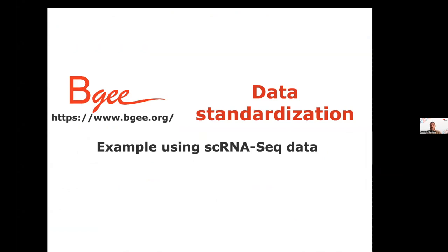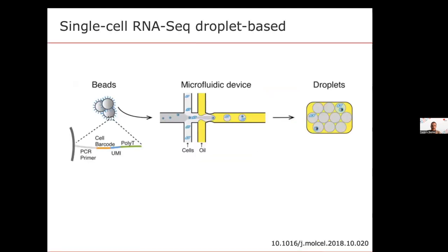Single-cell RNA-seq data adds more complexities than previously bulk RNA-seq data. For droplet-based technologies, you have beads with sequences attached, including a PCR primer, a cell barcode, a unique molecular identifier, and a poly-T tail to attach the poly-A mRNA. Using a microfluidic device, you isolate in each droplet one cell with one bead, allowing sequencing.